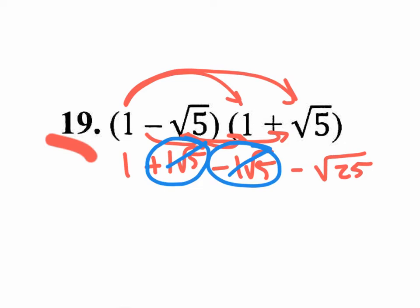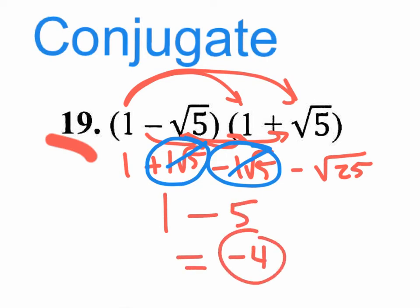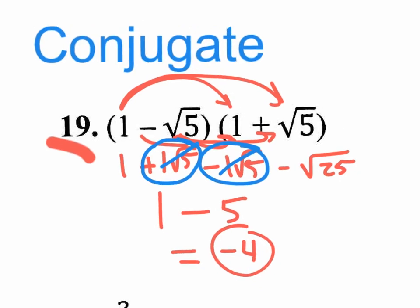The middle terms are eliminated. This is what happens when you multiply a binomial by its conjugate — the radicals disappear. The conjugate is simply changing the middle sign. So 1 minus the square root of 5 times 1 plus the square root of 5 — notice the middle radicals disappeared, and even this radical disappears because the square root of 25 is just 5. So you end up with 1 minus 5. The answer is negative 4. No more square roots.